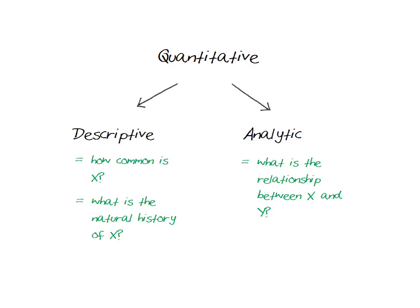For example, if we measured how many people in the population had diabetes, that would be a descriptive study. However, if we examined the relationship between ethnicity and diabetes, then this would be an analytic study. In practice, some studies may have both descriptive and analytic aspects — for example, a survey that reports how common diabetes is in the population (the descriptive component), but also reports the relationship between characteristics such as age, sex, and ethnicity with diabetes (the analytic component).